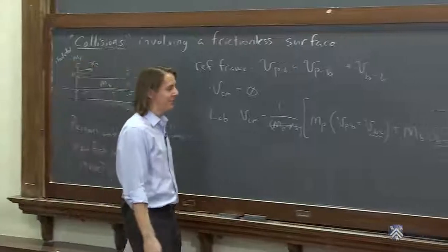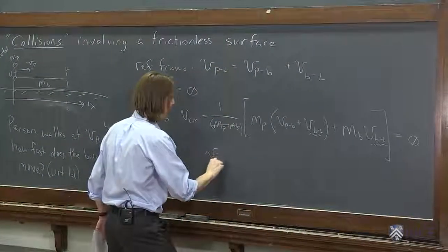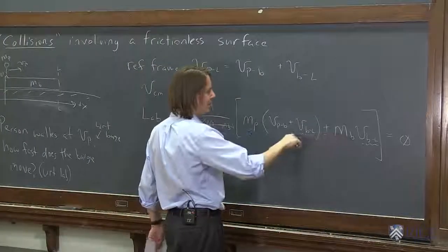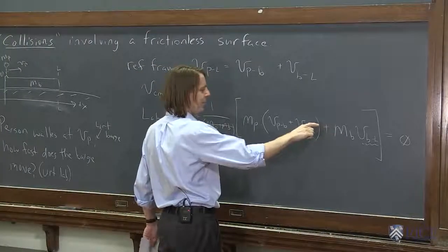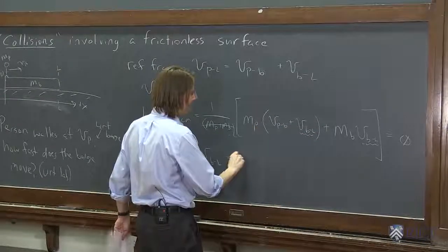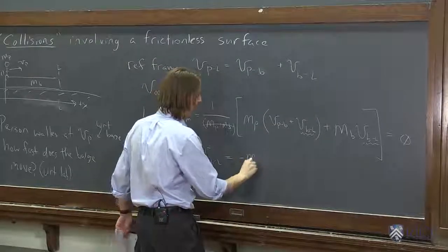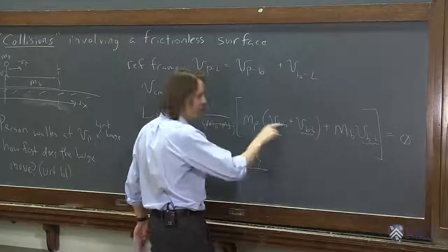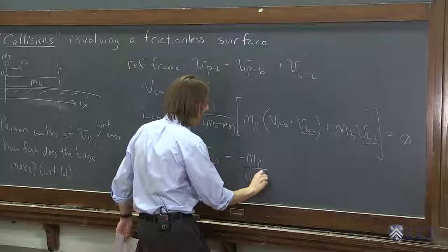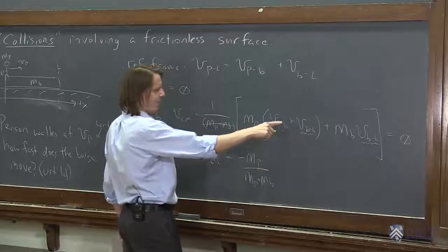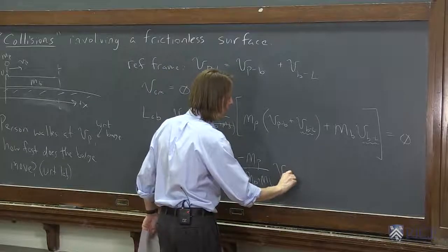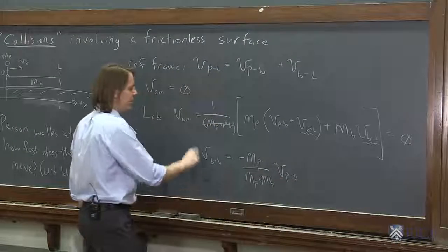So what would I do? I've got MP, MP, MB, MB, MP. I would take that one to the other side and divide by the total mass. So I'm going to get a negative, and this is the part I didn't take over: MP over the sum, MP and MB I did take over, MP plus MB, times the velocity of the person in the barge frame. And that's actually what you were given in the problem.